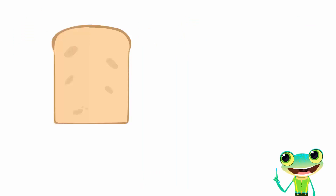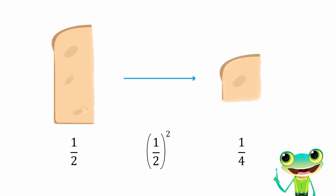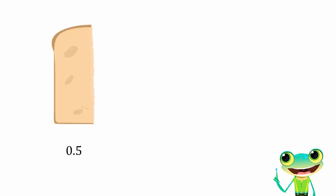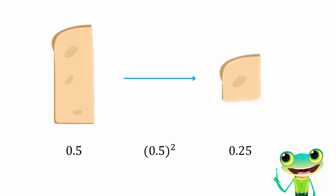For example, if you square half a slice of bread, you will be left with only a quarter of a slice. We can extend this property to decimals as well. Half a slice of bread is equal to 0.5 of a slice of bread in decimal form. The square of 0.5 is 0.25. This is consistent with our previous result in which we showed that the square of half a slice of bread is less than half a slice of bread.